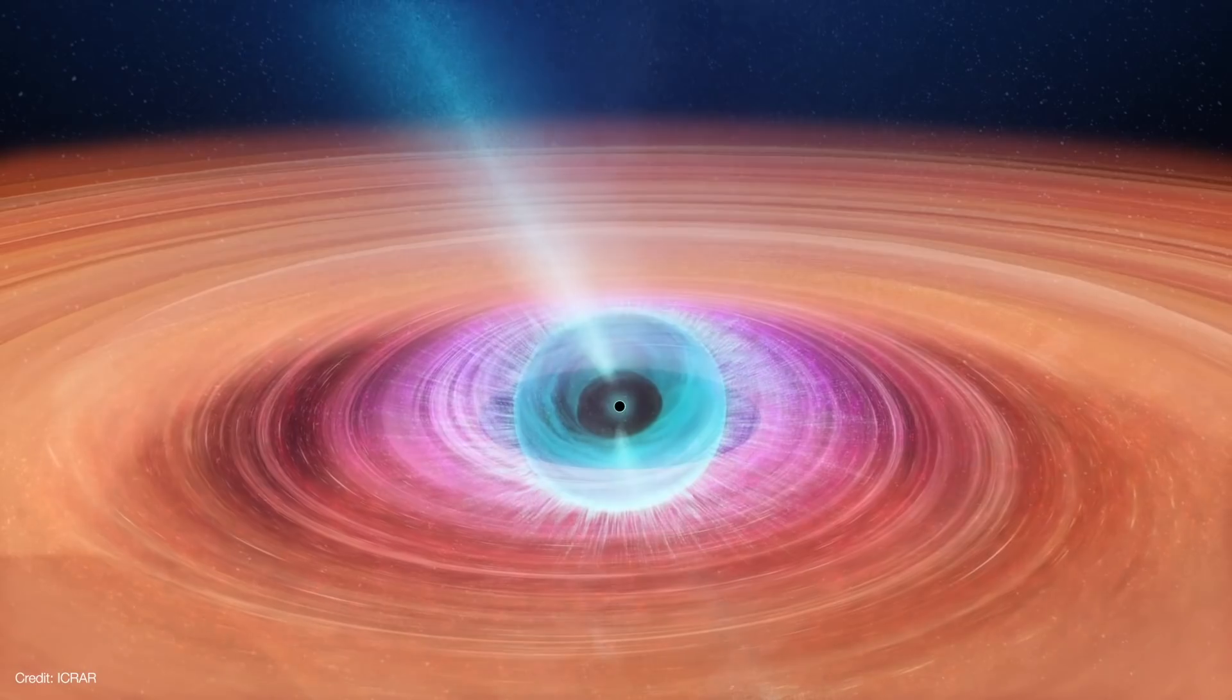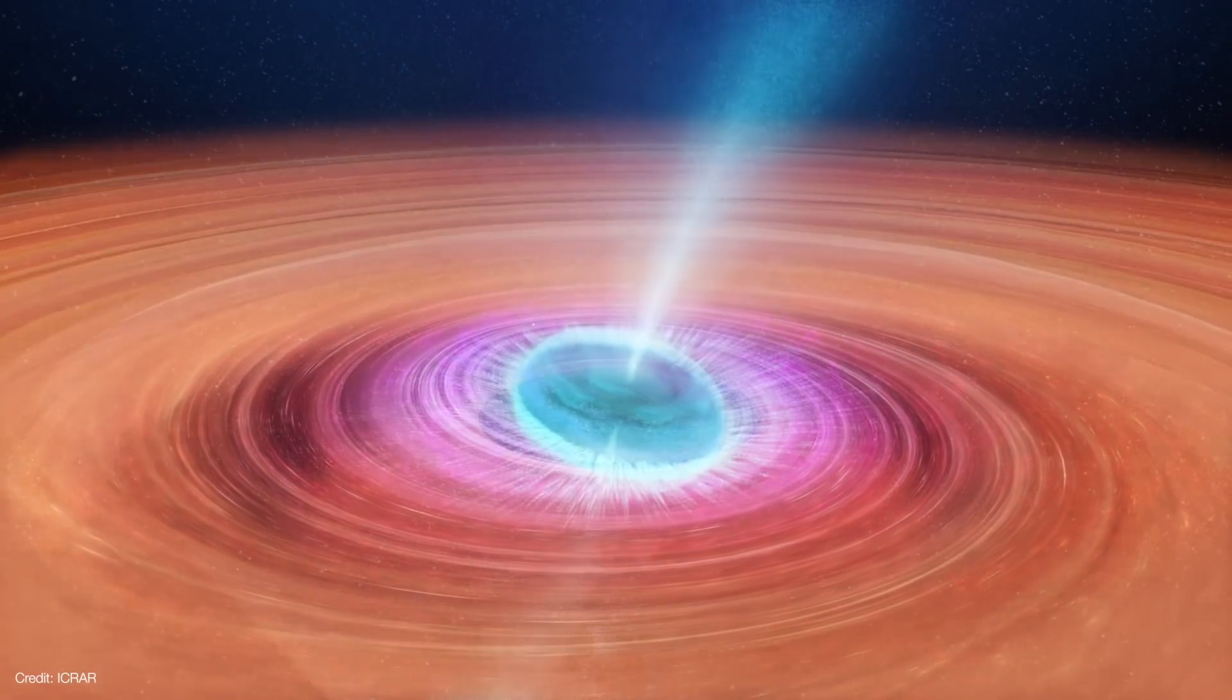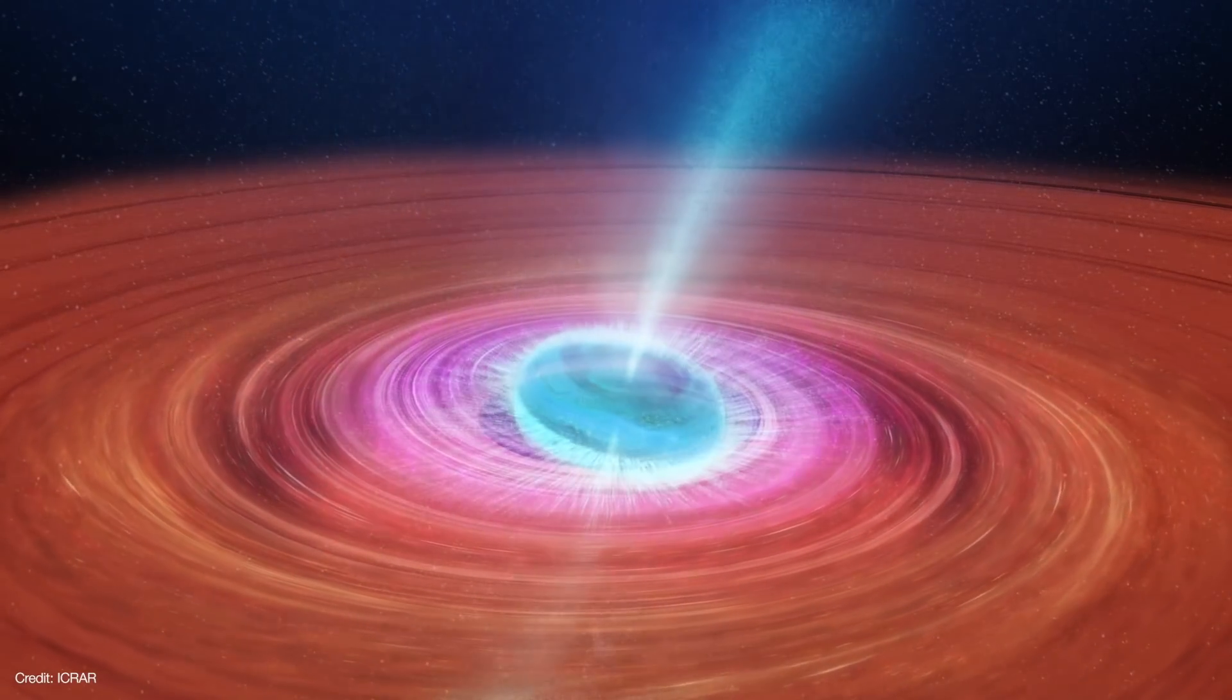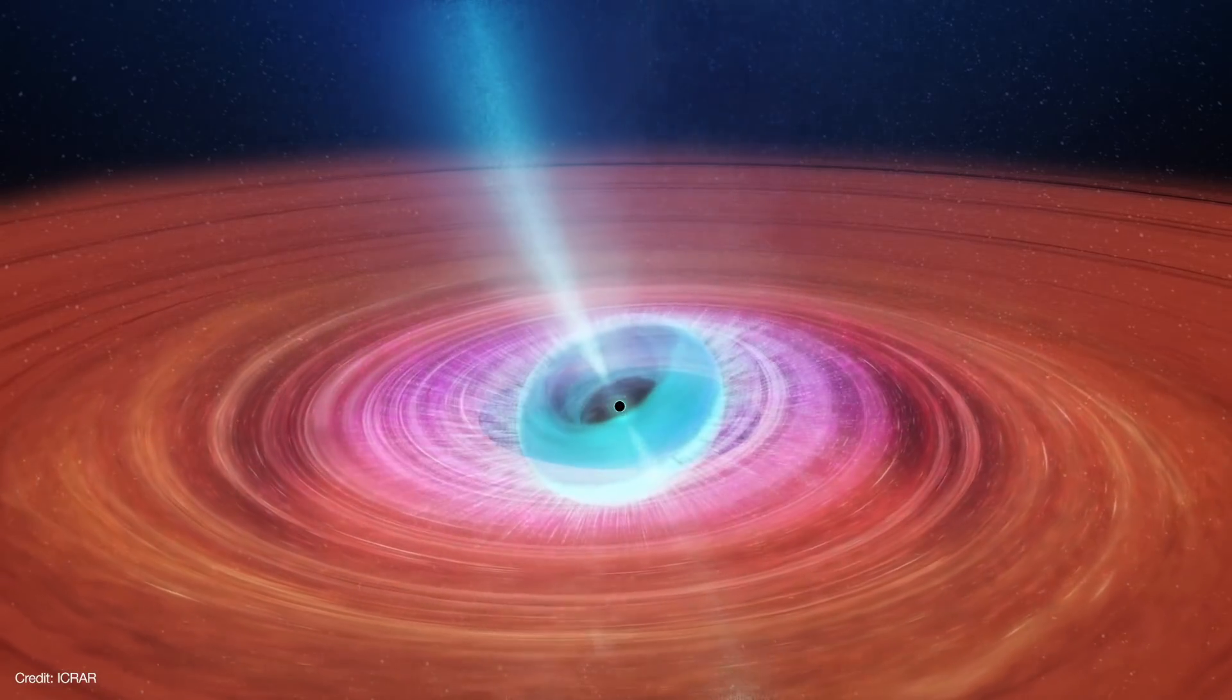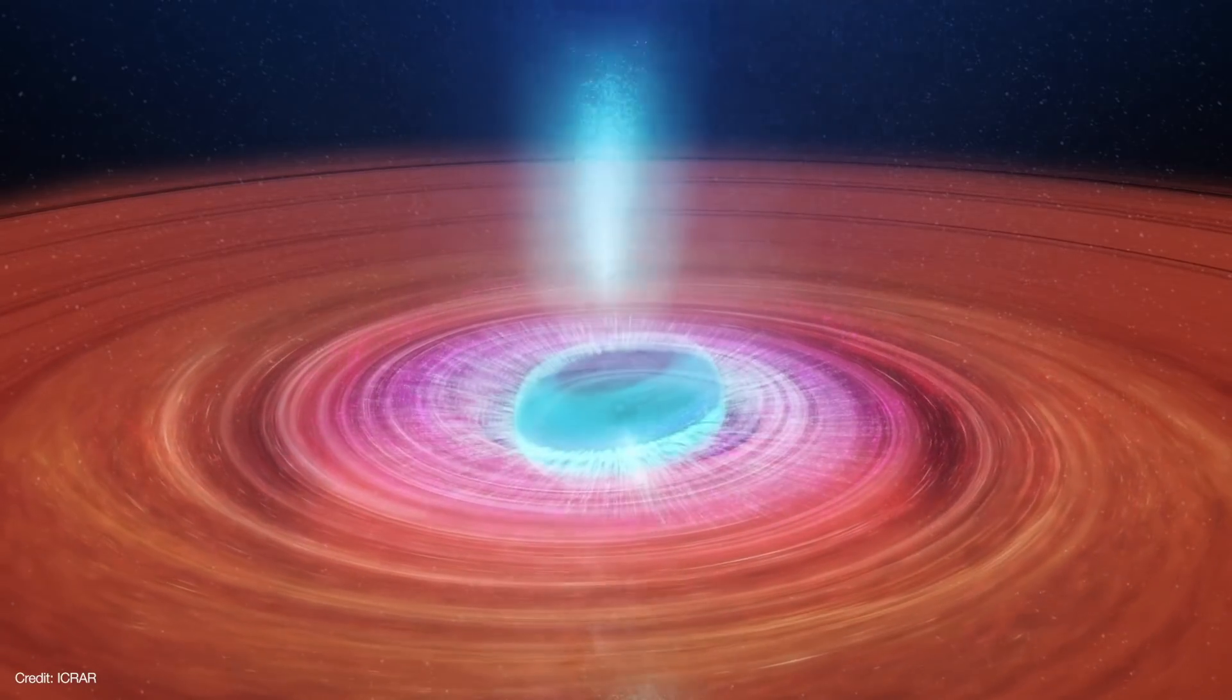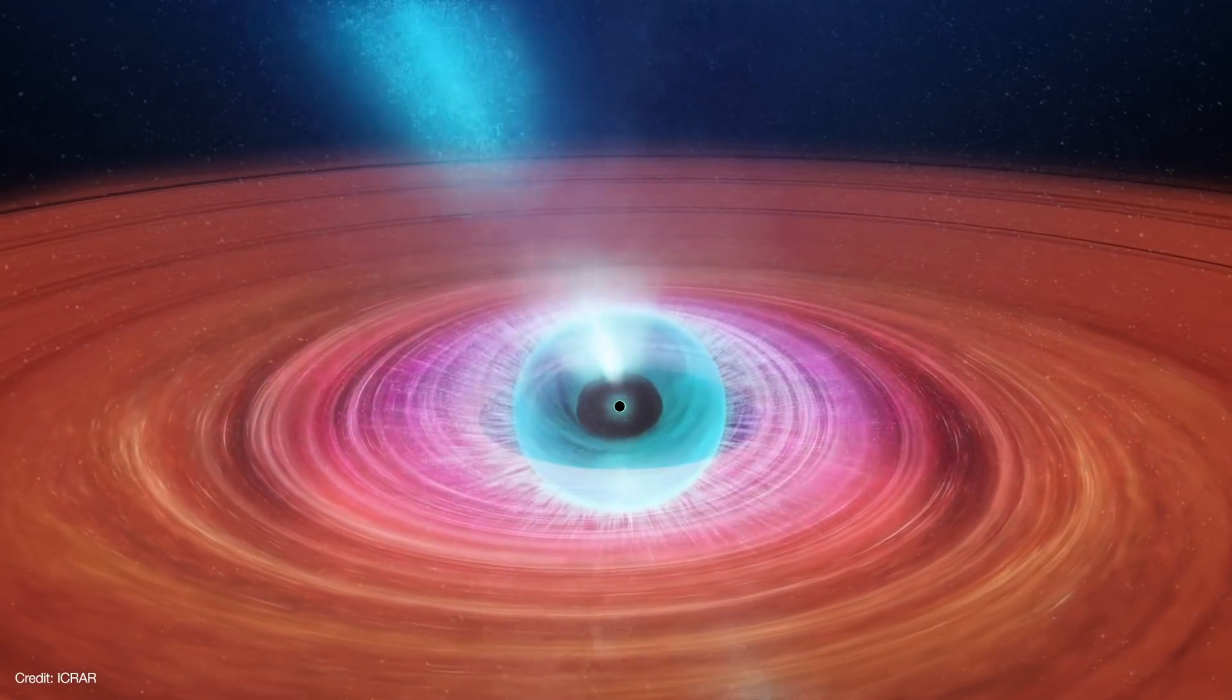As it does so, it fires jets of plasma at nearly half the speed of light. The system is V404-Cygni, and astronomers have discovered that the black hole is wobbling. But if that weren't strange enough, it's actually dragging the fabric of the universe around with it.